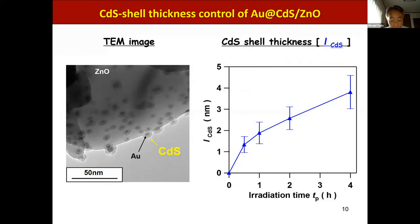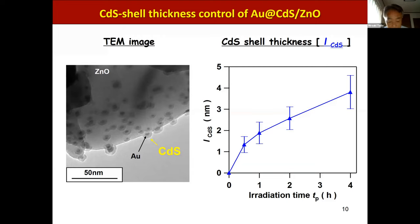As shown by TEM images of the resulting sample, each particle on ZnO takes a gold core CdS shell structure. The right figure shows the CdS shell thickness as a function of irradiation time. The thickness increases with increasing irradiation time and can be controlled within 5 nanometers by adjusting irradiation time.